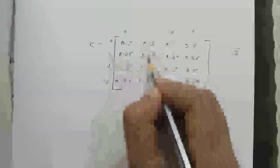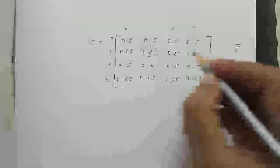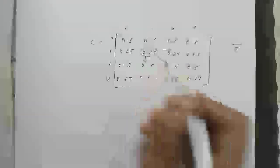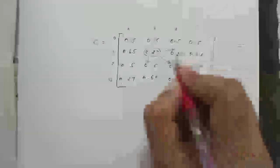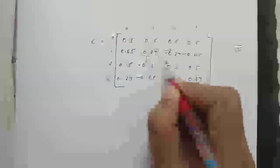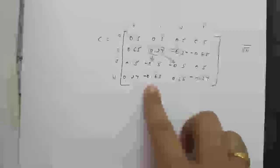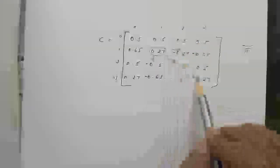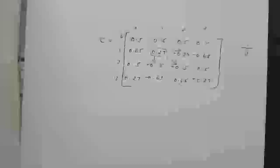Taking the top-left element as the reference element, its horizontal, vertical, and diagonal neighbors have sign changes. The reference element has a positive sign, while the horizontal direction elements, vertical direction elements, and diagonal elements all have negative signs. This gives us our final cosine transform matrix C.